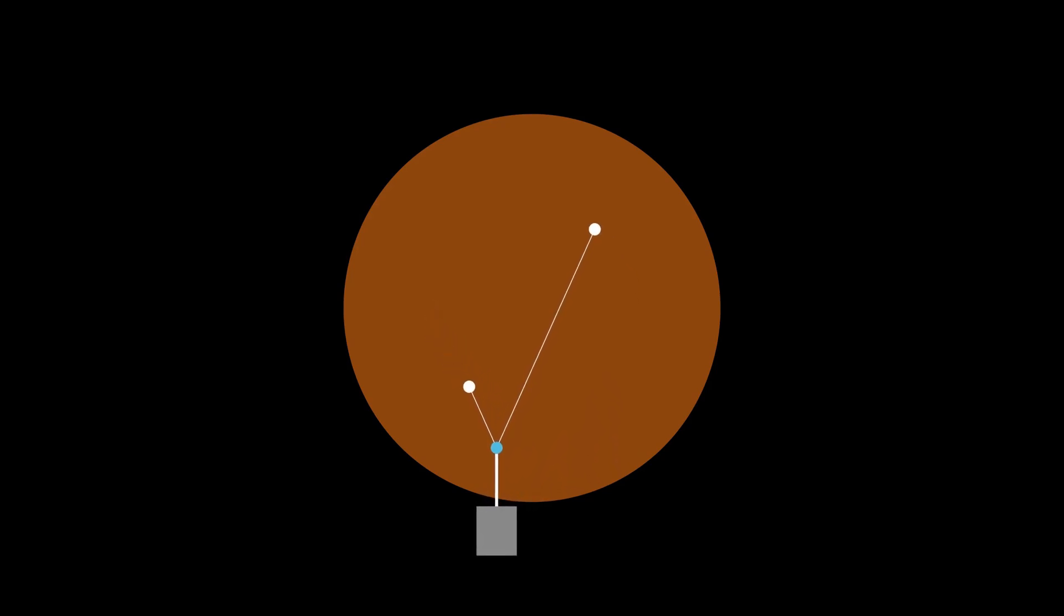As we start rotating the wheel, we see that the blue hinge traces out a certain shape. Since the string is still held taut and the two thumbtacks are still in place, we know that, by definition, this shape must be an ellipse.